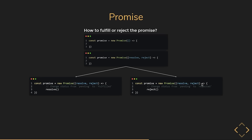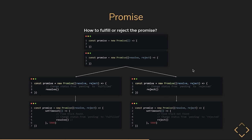Both resolve and reject are typically called after an async operation. To keep things simple, let's use setTimeout — assuming it takes five seconds for your friend to go out and text you back. If the food truck was found, we call resolve after five seconds; if not found, we call reject after five seconds. This is pretty much how you fulfill or reject a promise.